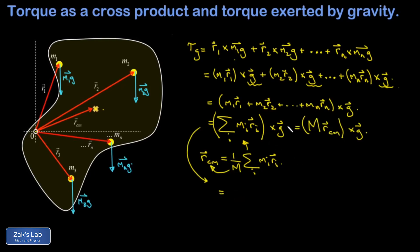To wrap up the derivation, we take the scalar M and move it onto the second vector instead of the first. We end up with the total torque exerted by gravity equal to the center of mass position vector crossed into Mg, where M is the total mass of the rigid body.